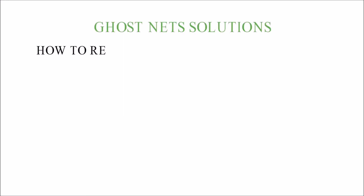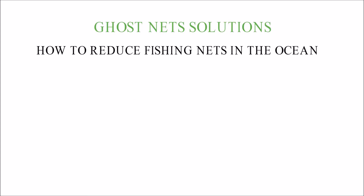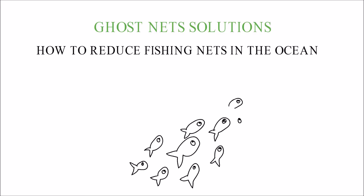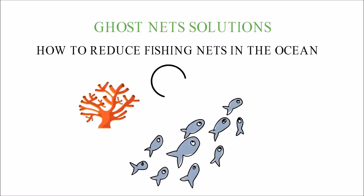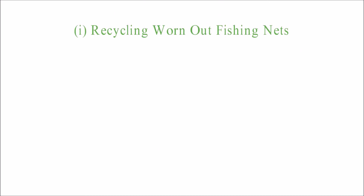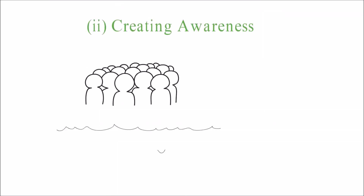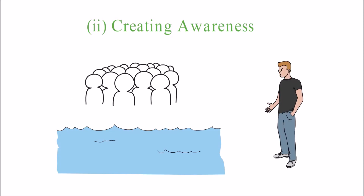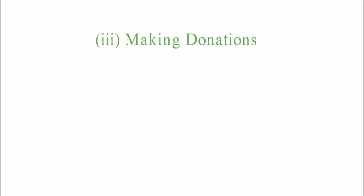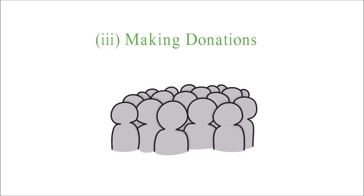Ghost net solutions — how to reduce fishing nets in the ocean. Ghost nets damage marine habitats, coral reefs, aquatic animals, and marine biomes. 1. Recycling worn-out fishing nets: fishermen should be encouraged to reuse old fishing nets to keep the oceans clean. 2. Creating awareness: people who live near the ocean should be taught how to keep marine biomes safe and healthy. 3. Making donations: people can donate to marine conservation groups that work to remove ghost nets from the oceans. Ghost nets should be retrieved from the world's oceans.